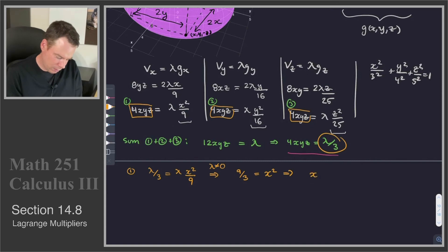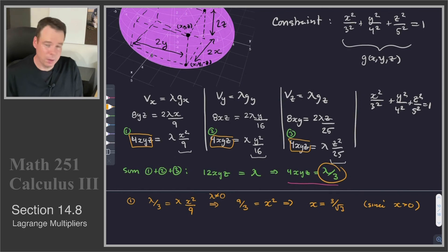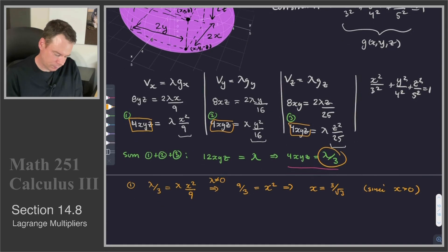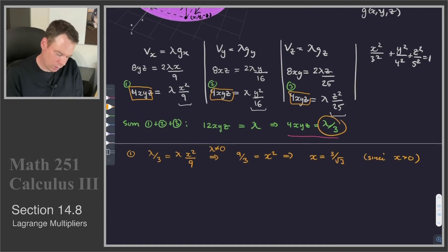So in other words, x = 3/√3. And this was because, since x has to be bigger than 0. Why does x have to be bigger than 0? Well, I'm taking xyz to be that vertex of the box in octant 1. And so its x, y, and z values are all positive.